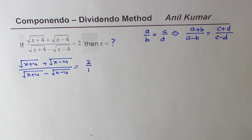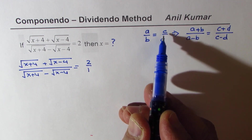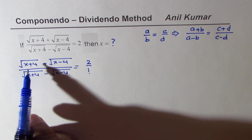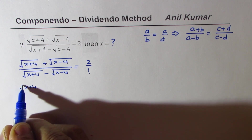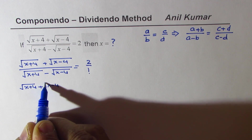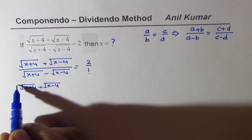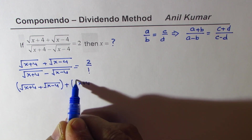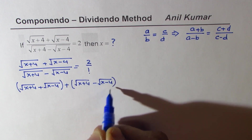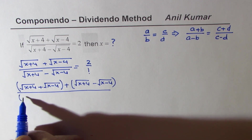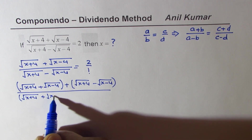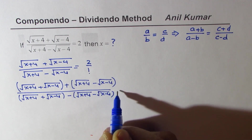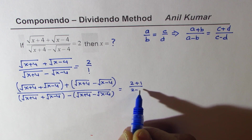We can write the right side as 2 over 1. Think of a over b equals c over d where c is 2 and d is 1. Applying the componendo-dividendo method, we rewrite the left side: numerator becomes square root of x plus 4 plus square root of x minus 4 added to the denominator square root of x plus 4 minus square root of x minus 4. The new denominator is the numerator minus the denominator. On the right side, we get 2 plus 1 over 2 minus 1, which equals 3.